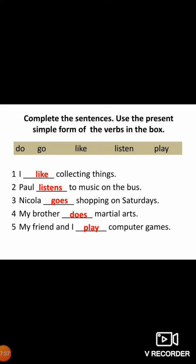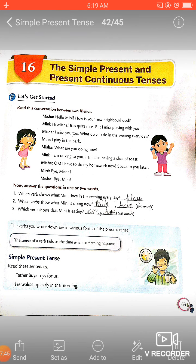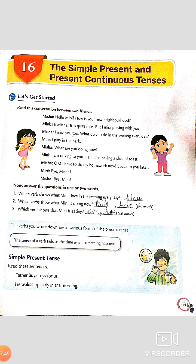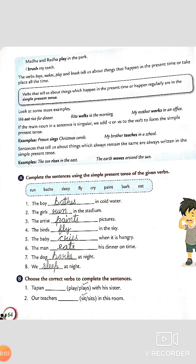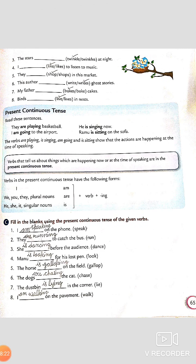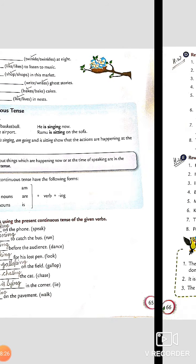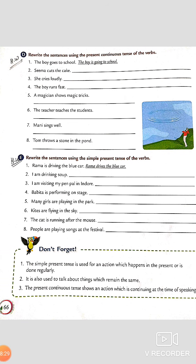This is also a worksheet which you can practice. Now see your book work — it's given on page 63 of your grammar book. The simple present and present continuous are also given there. For now we are talking about simple present tense. On page 64 we have Exercise A: complete the sentences using the simple present tense of the given verbs. This is done for you. In Part B, you need to complete sentences choosing the correct verb. That is your exercise part, and this one is your homework — you have to do it yourself.